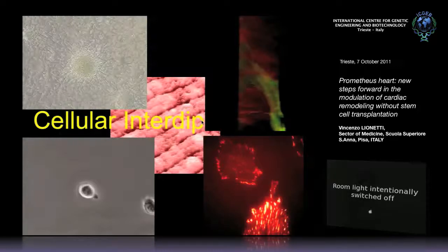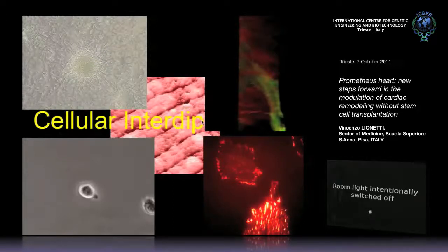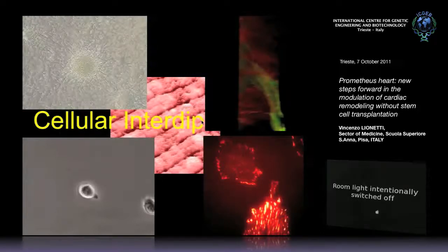And comes another concept: cellular interdependence — meaning you cannot sustain the function and structure of the heart using only one single kind of cell. You need to allow a cross-talk between these kinds of cells. They need to communicate with each other in the best way. So you have to think not at one cell, but at the interaction between these different kinds of cells.